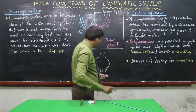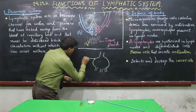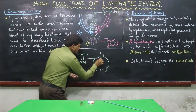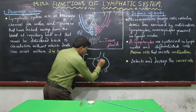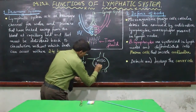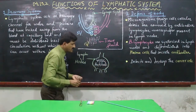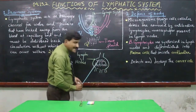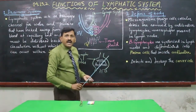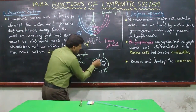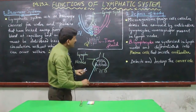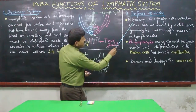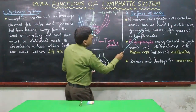The second function is that the lymphatic system acts as a defense system of the body. Inside the lymph node, WBCs and antibodies are present. As lymph passes through the lymph nodes, microorganisms, foreign cells, and cellular debris are removed here.